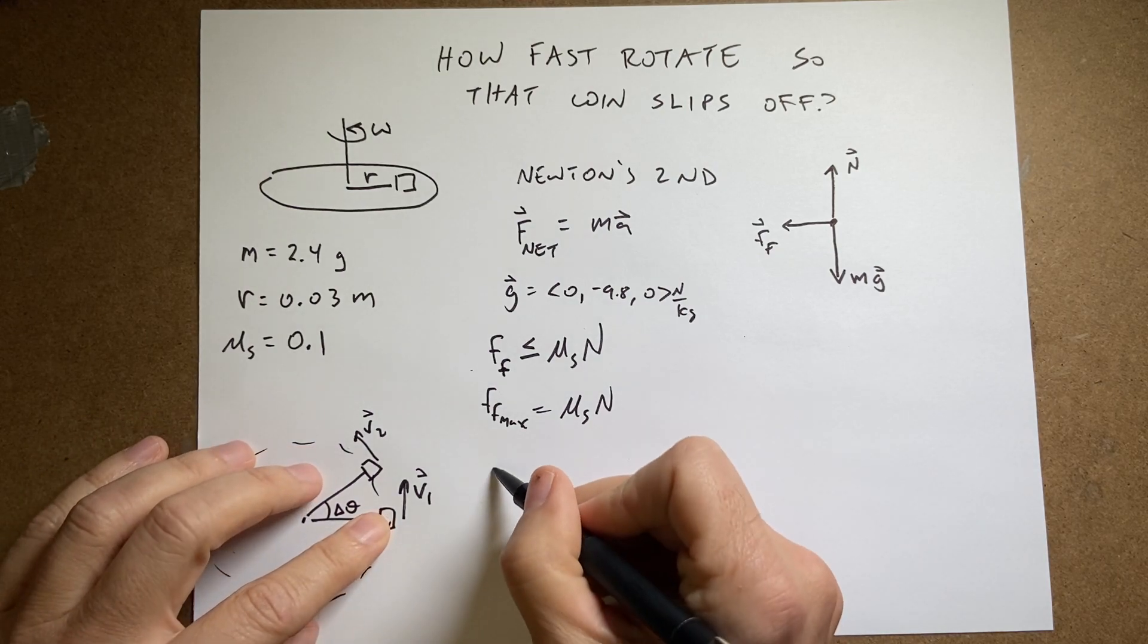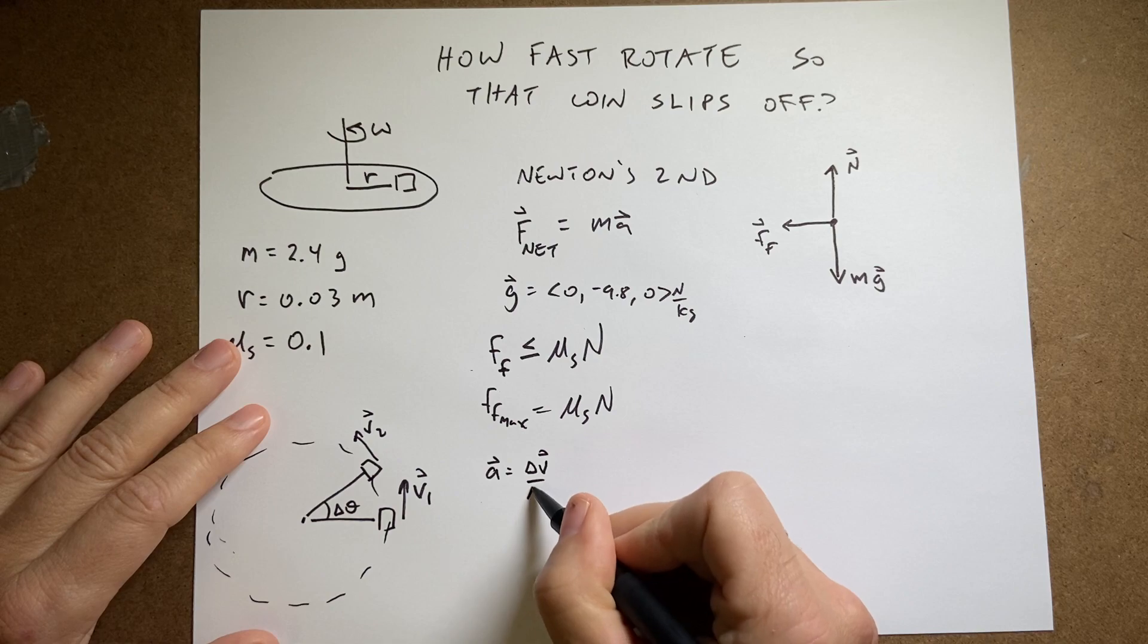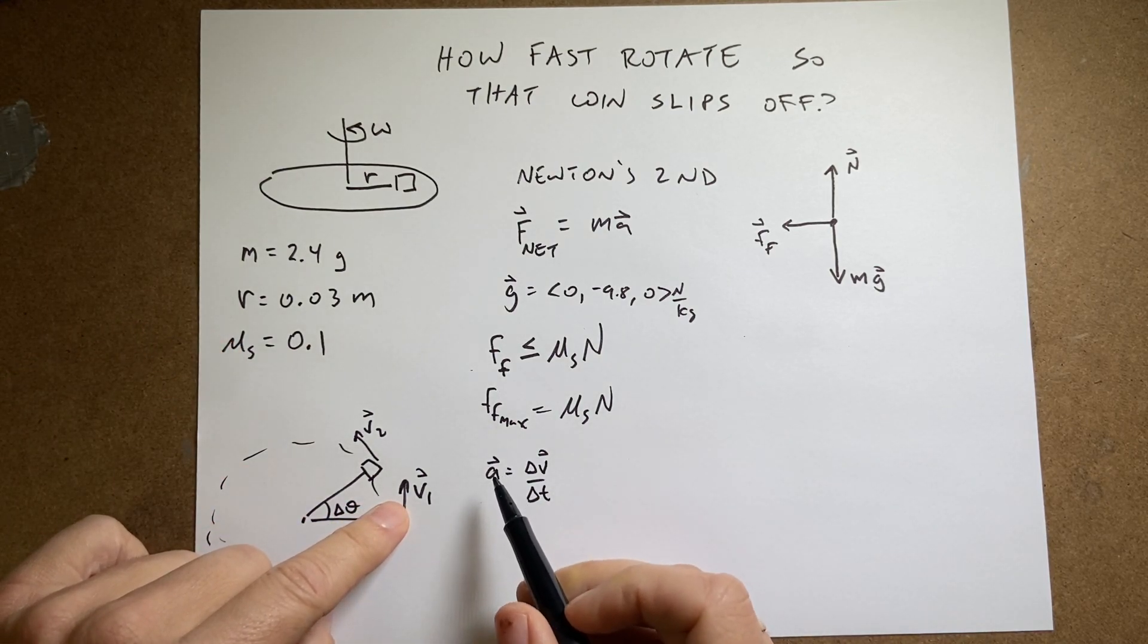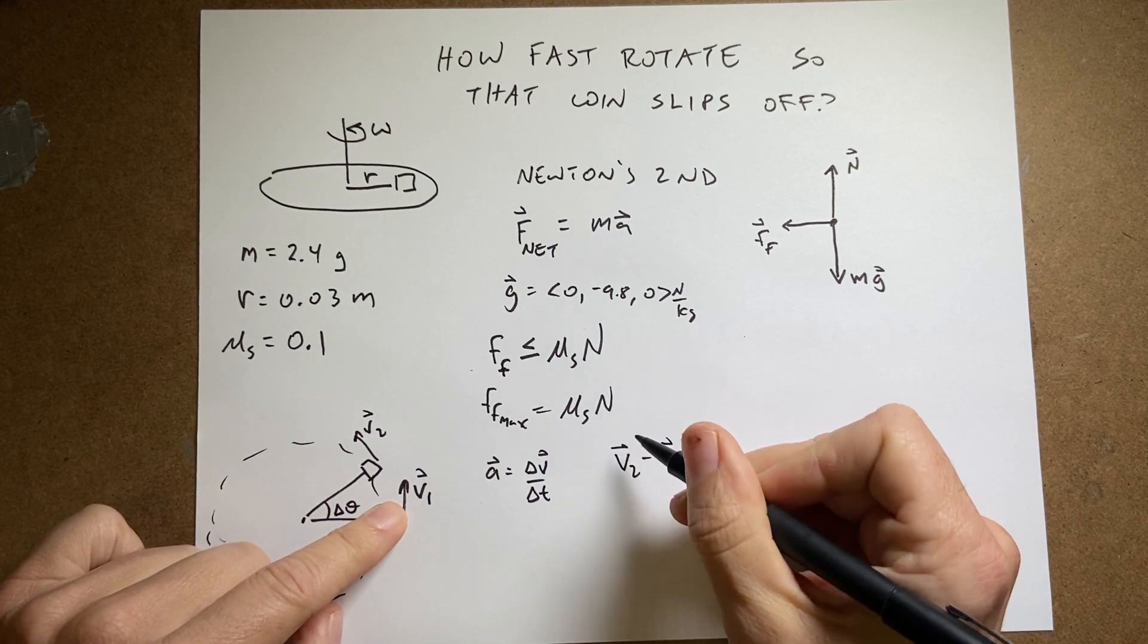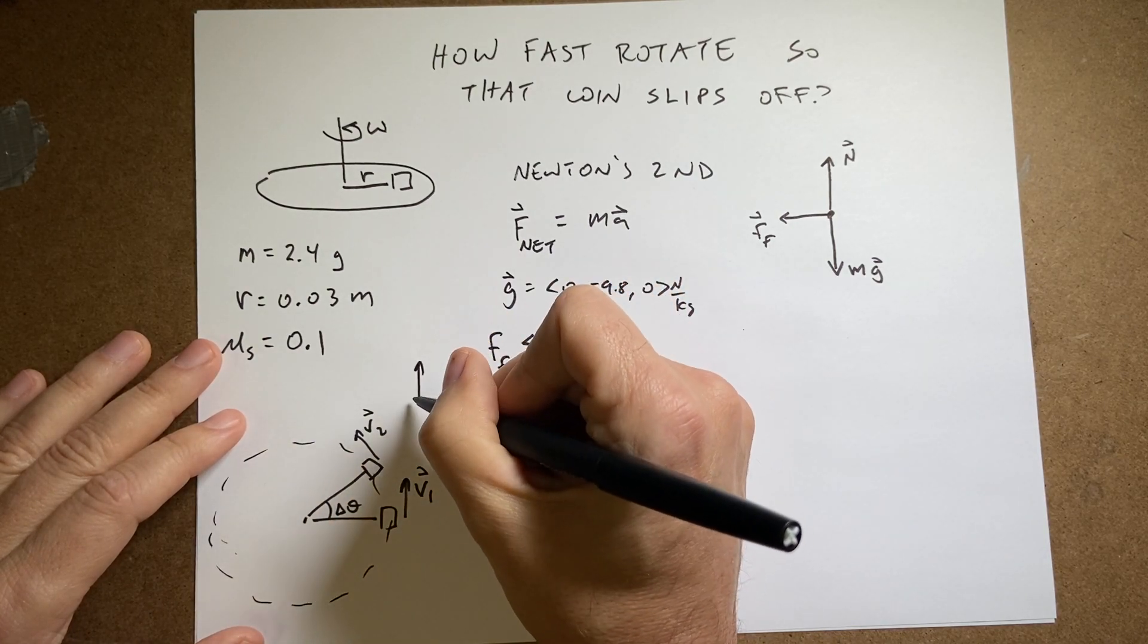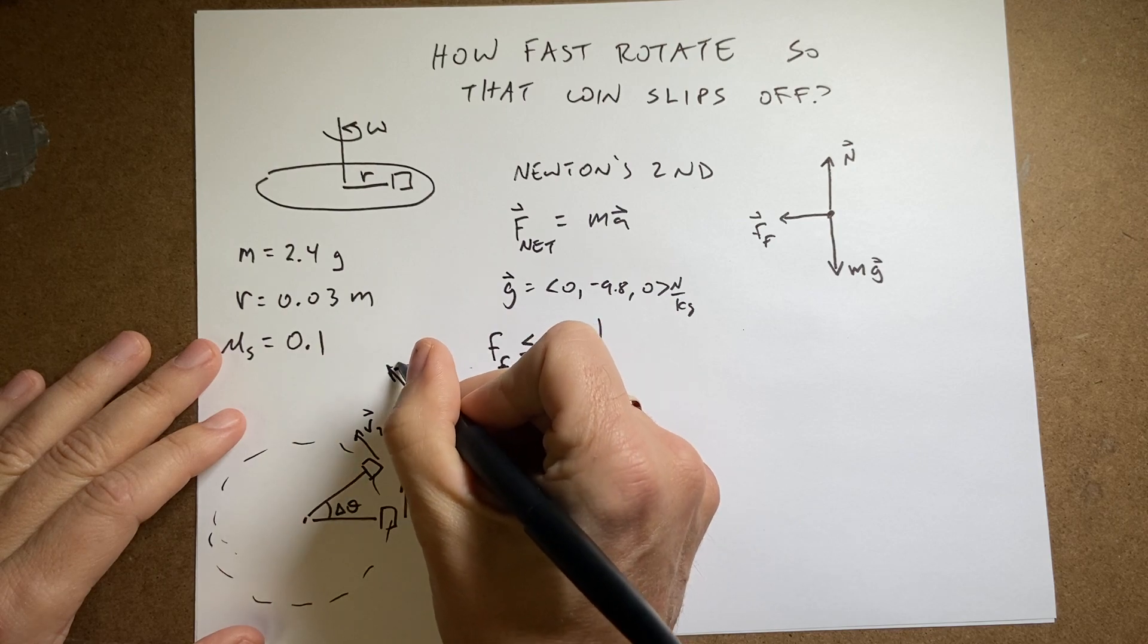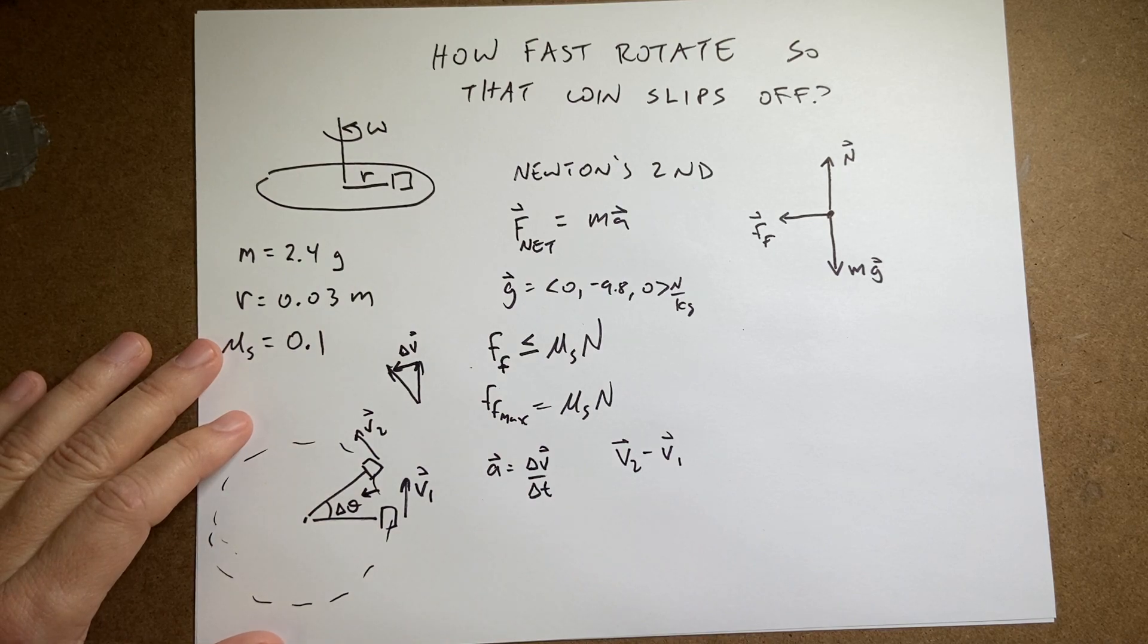And there's some angle delta theta. So the definition of acceleration is the change in velocity over the change in time as a vector. And you can see here if I do V2 minus V1, it's going to be, let me redraw these two vectors. Here's V1. Here's V2. That's a little bit shorter. So there's delta V. So the change in velocity is towards the center of the circle.